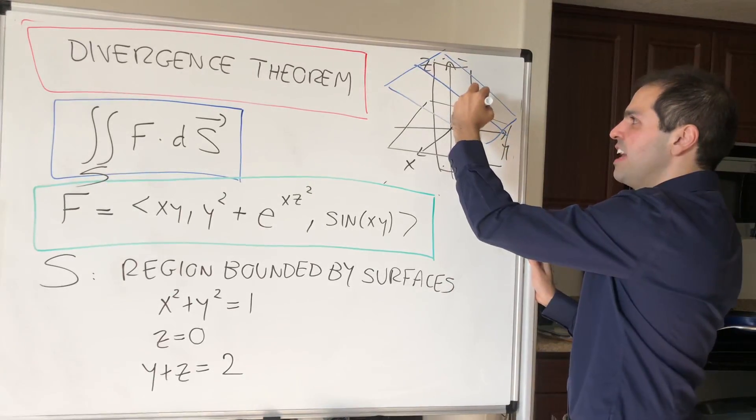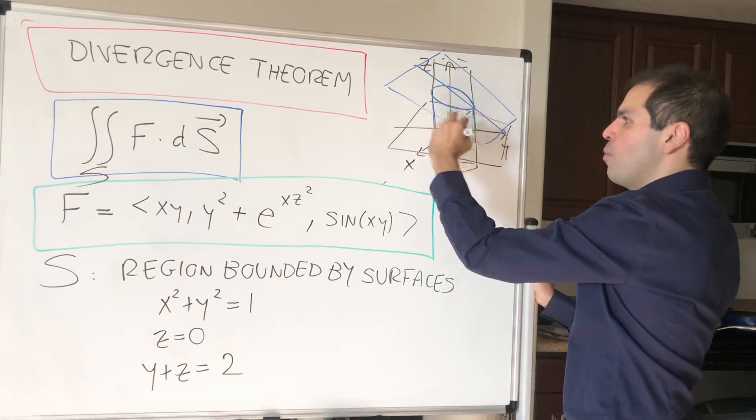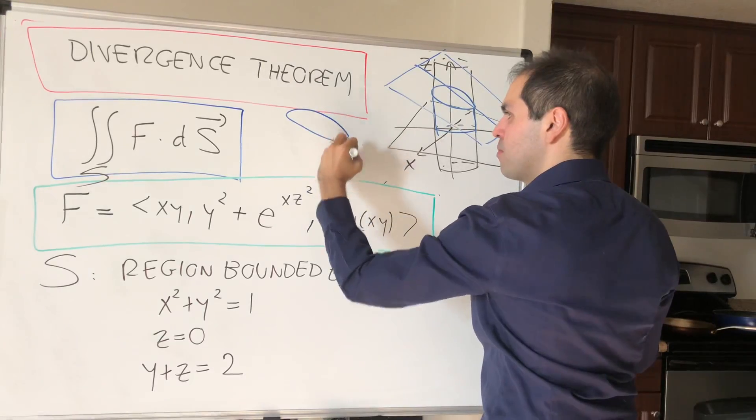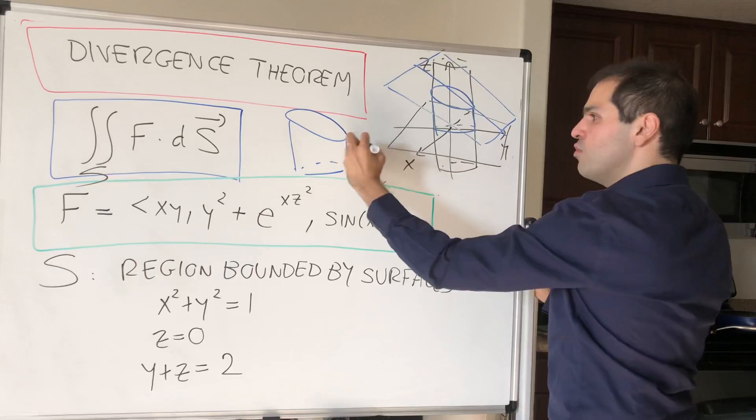And then what you get in the end is this weird surface here, which kind of looks like an open can. So maybe let me draw it like that. So that would be your surface.